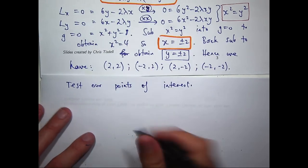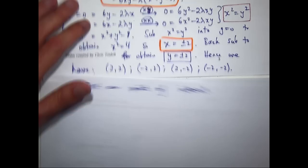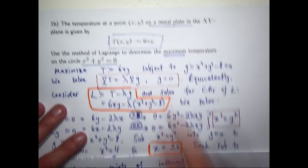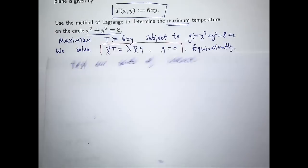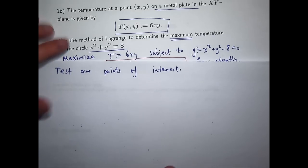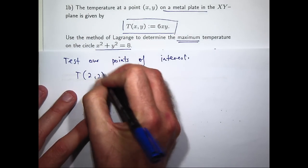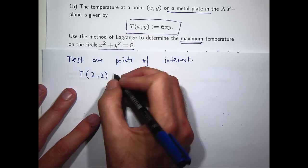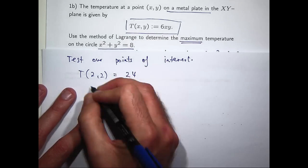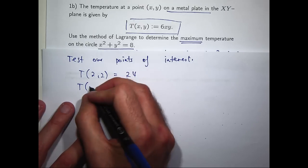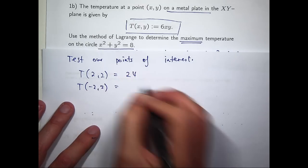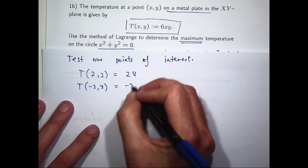This is our temperature function, so let's just plug in each point into our temperature function. If x equals 2, y equals 2, we're going to get something like 24. Same with, if I put in say (-2,-2) here, I'm going to get -24.